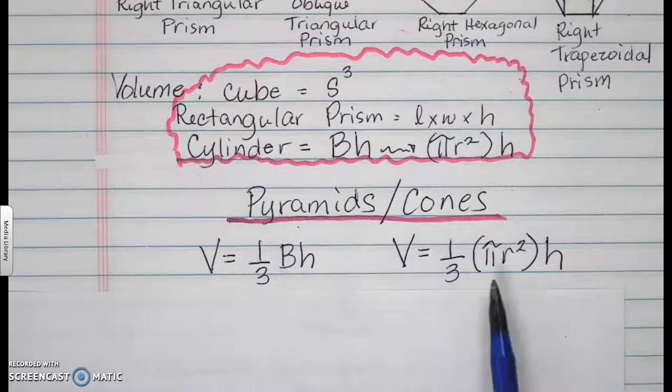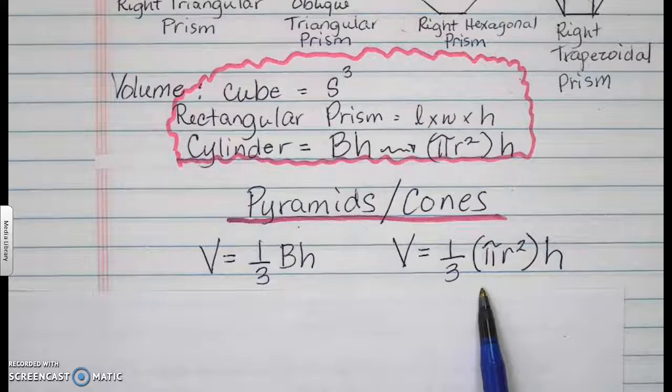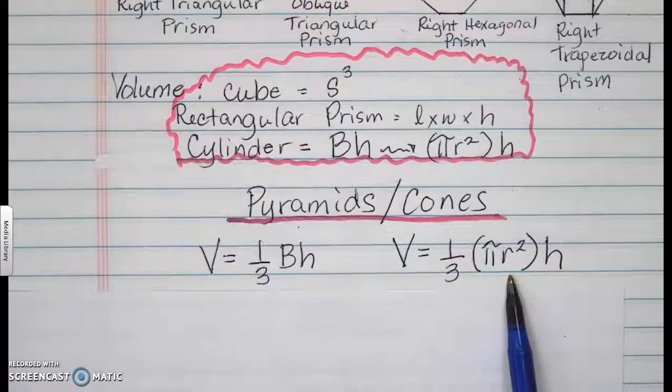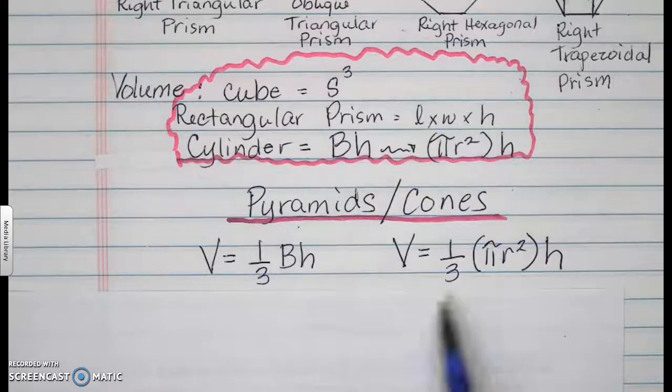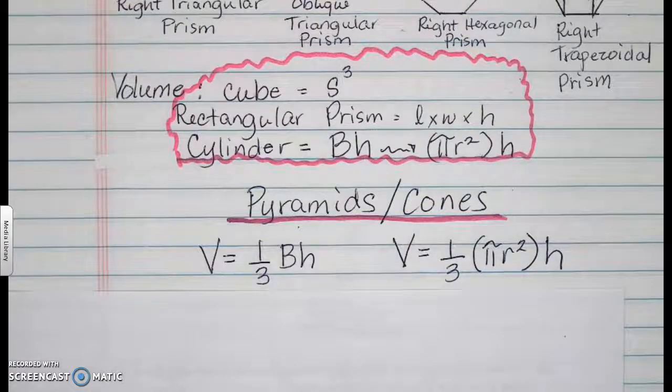The same principle is applied to cones. In this case, big B is pi r squared, and then H is the height of your cone. Divide that by 3, you're going to get the overall volume of that cone.